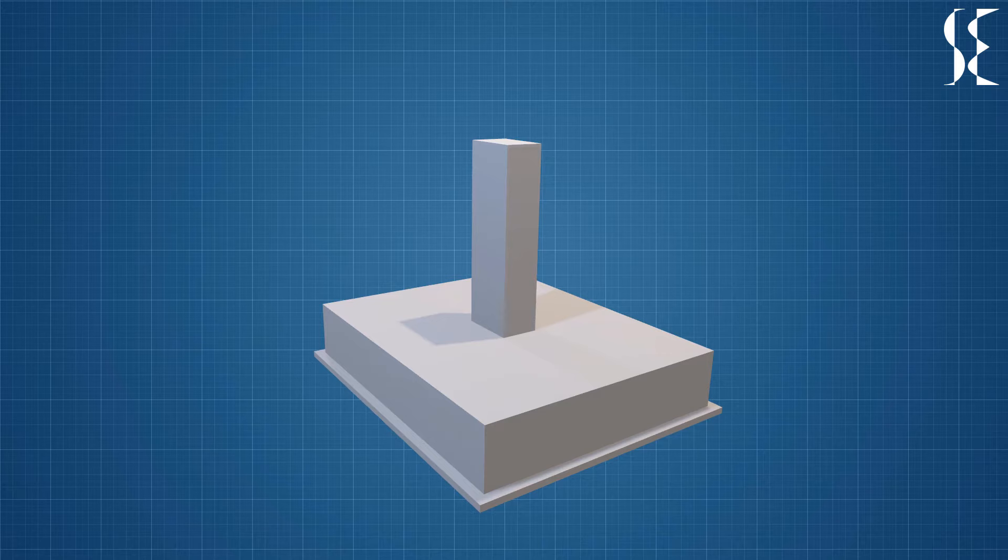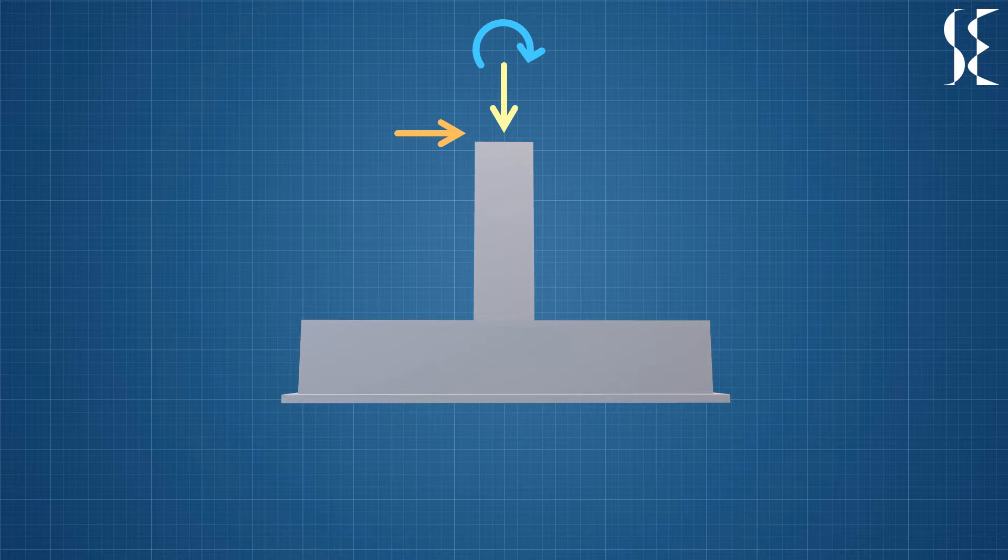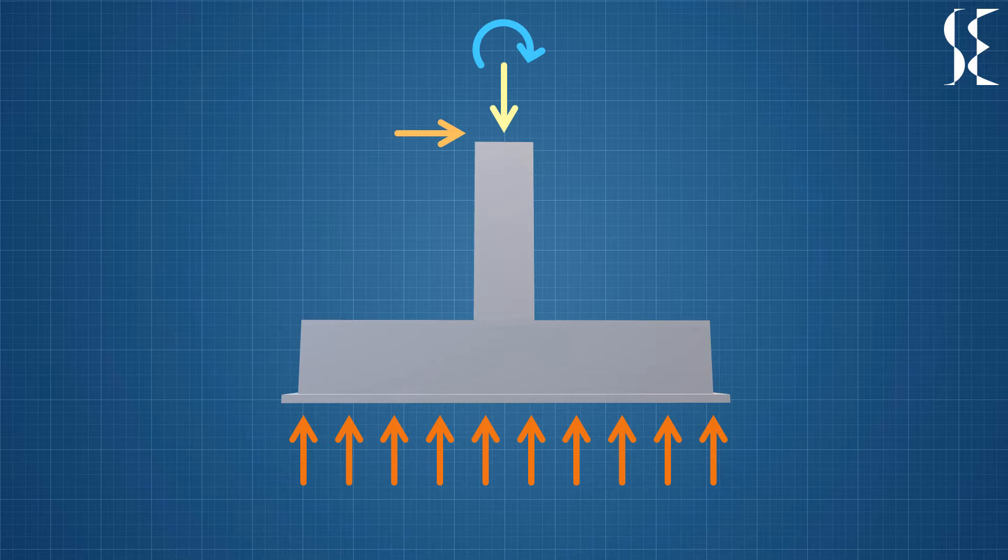Isolated footings take load from the column and transfer it to the soil below it. This load can be vertical, lateral or a moment. In return, soil exerts a reaction force on the footings.